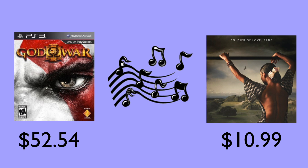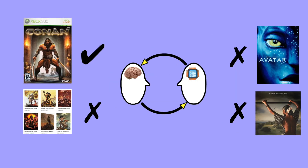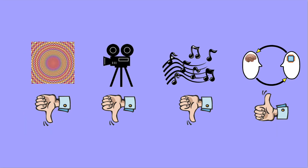Same thing goes with music — you can put great music in a game, but it's a lot cheaper to buy a CD or just stream it. Thus, when it comes to interaction, you can win with your game, but when it comes to graphics, animation, or sound, you just can't compete. With graphics, you lose. With animation, you lose. With music, you lose. But with interactivity, you win.